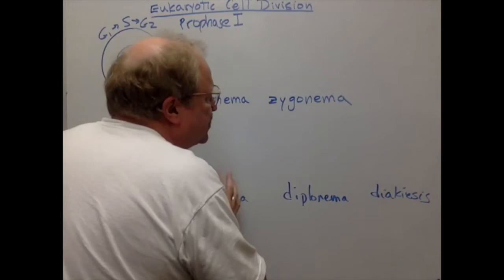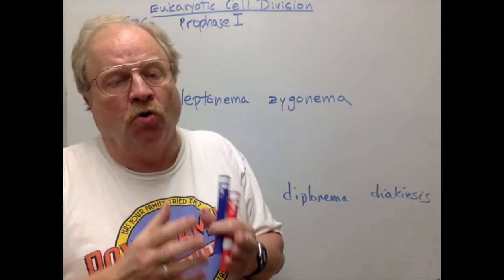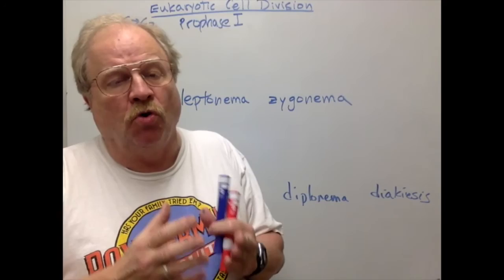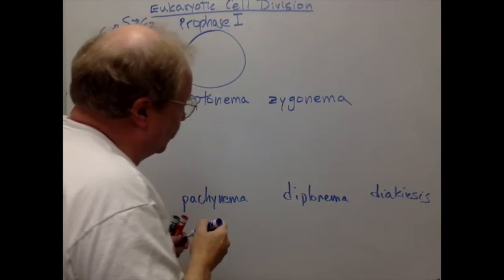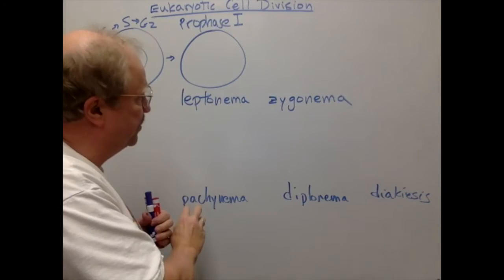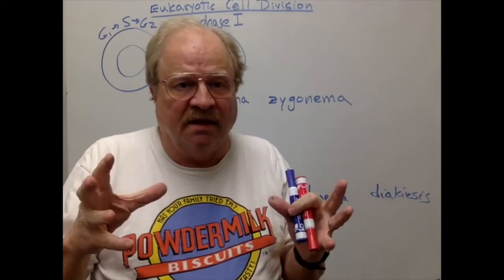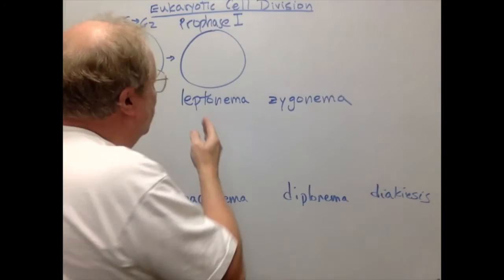Under a microscope, leptonema, zygonema, and pachynema look pretty much the same — chromosomes are getting shorter and fatter, like a cell with a ball of spaghetti in the middle. Distinguishing them microscopically is very difficult; they're really defined by the events happening during those substages. During leptonema, the chromosomes have started to condense so you can see threads, but they're still a jumble.